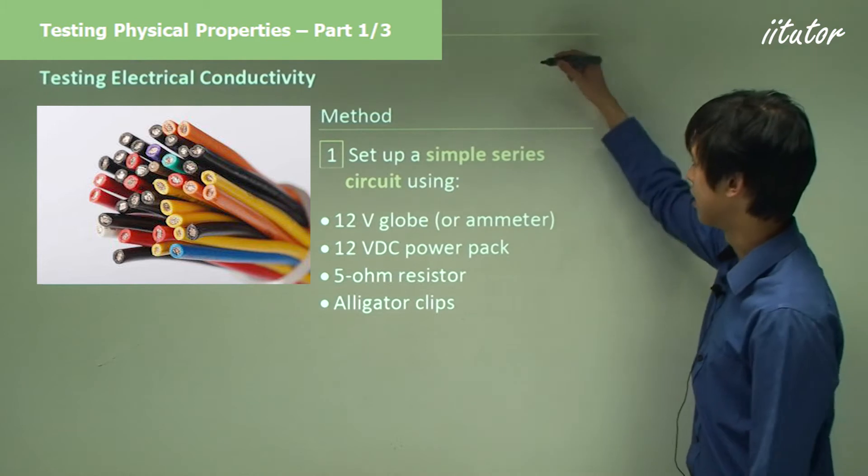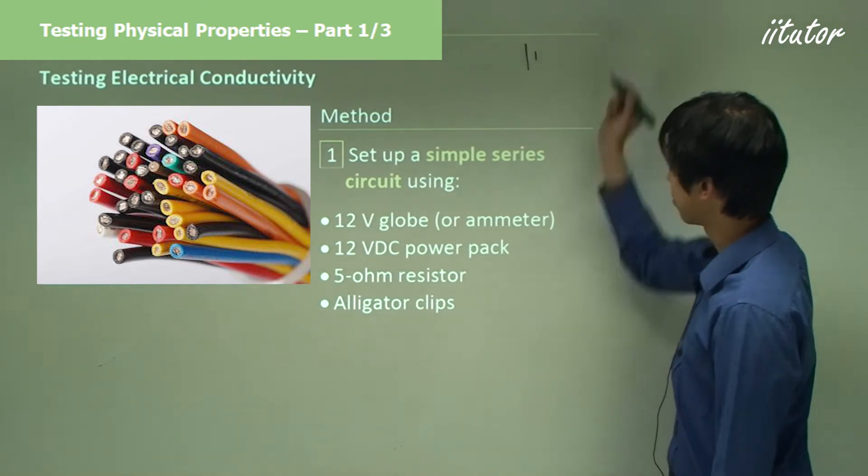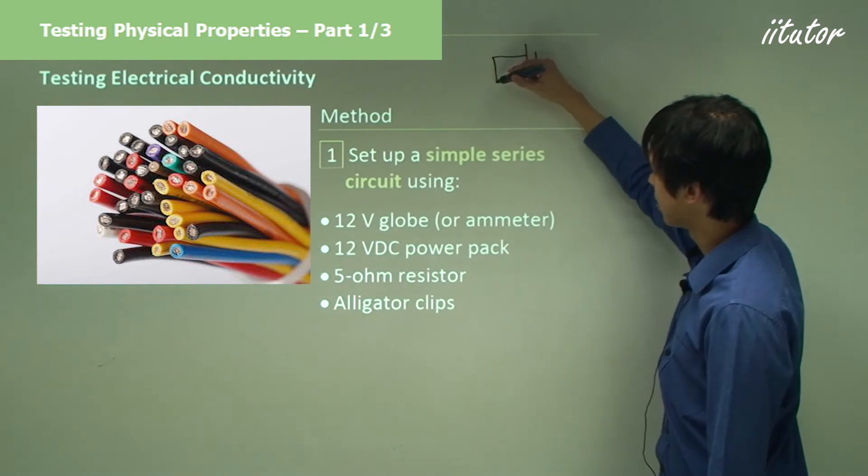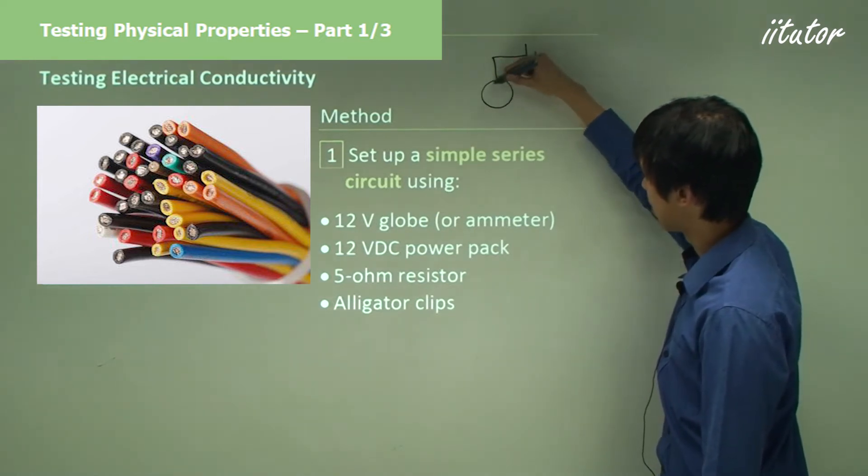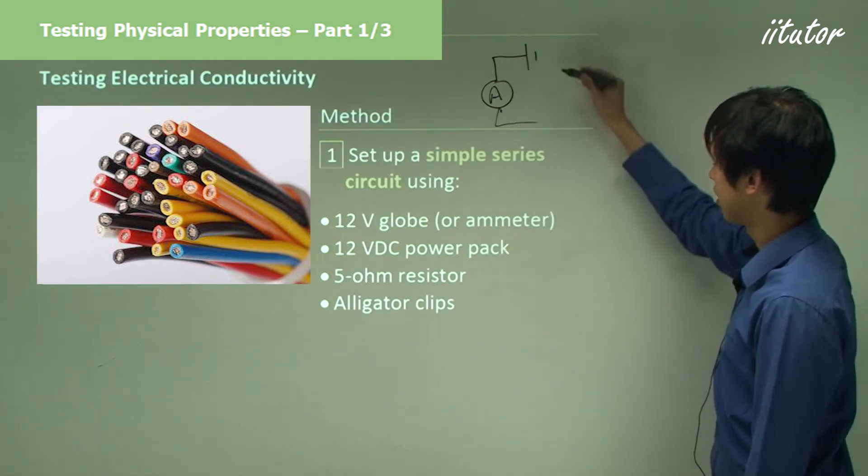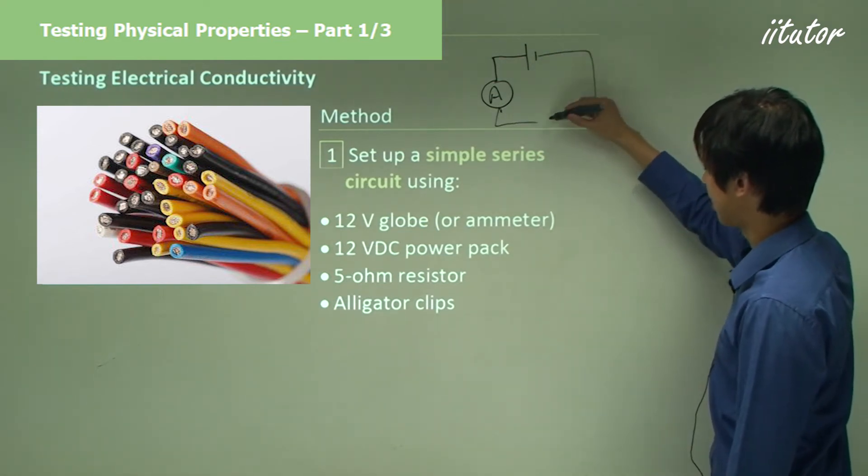Here's your 12 volt power supply. This is the positive end. We're going to have a light, let's say we have an ammeter, and then our sample goes there.